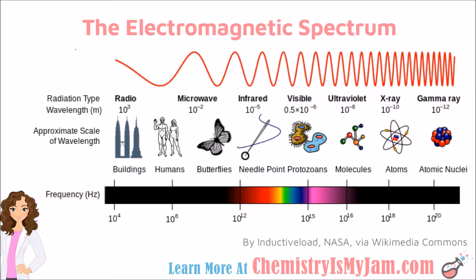This diagram also gives you some ways to visualize that size. For example, a radio wave is roughly the size of a building. When you get down to microwaves, you're getting into the size of somewhere between a human and a butterfly. Infrared waves are around the size of a needle point. Visible light is about the size of a protozoan. Ultraviolet light is about the size of a molecule. X-rays are about the size of atoms. A gamma ray, which has the shortest wavelength and highest energy, is about the size of the atomic nucleus.